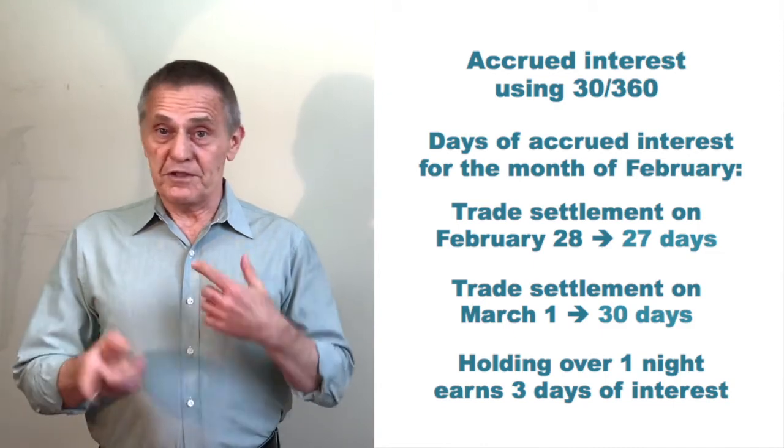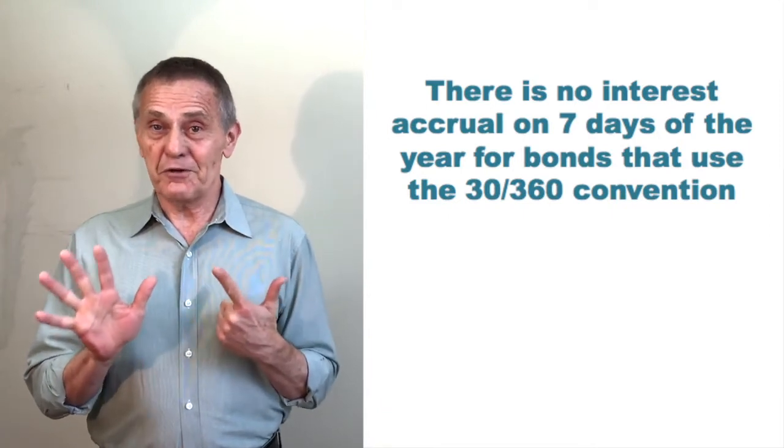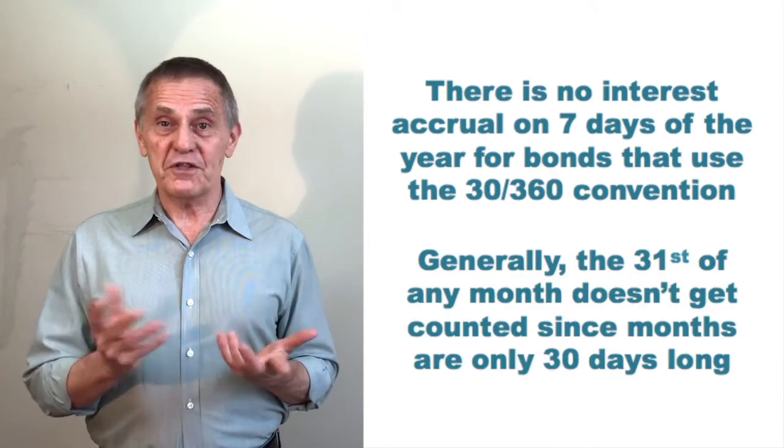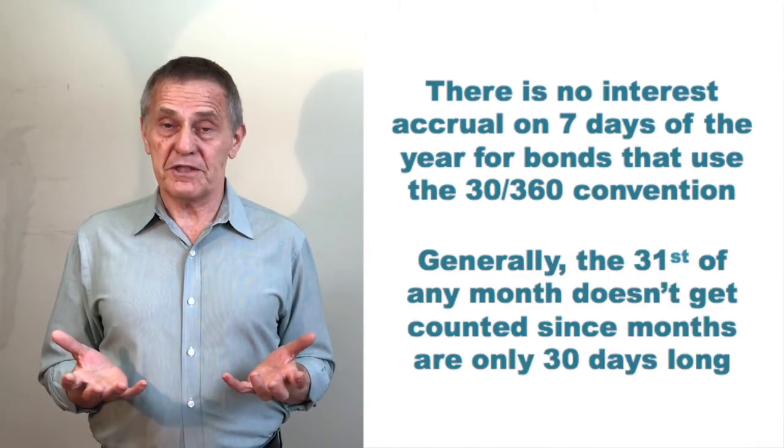Now, of course, the flip of that is true for the long months. There's seven days in the year when in theory you're not earning any interest whatsoever because anytime there's a 31st of the month, there's no accrual of interest on a bond that uses the 30/360 day count convention.